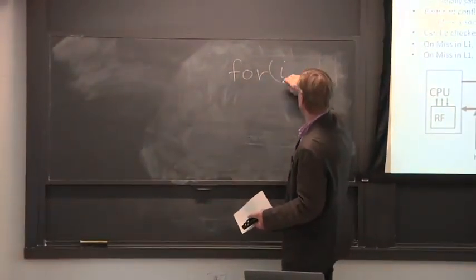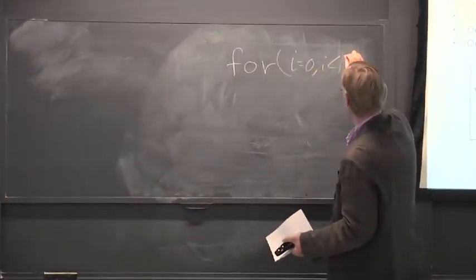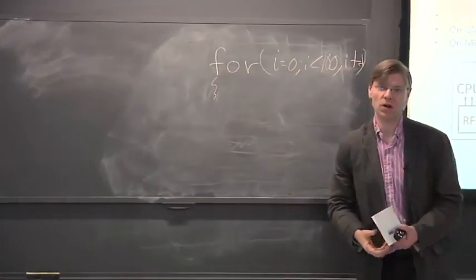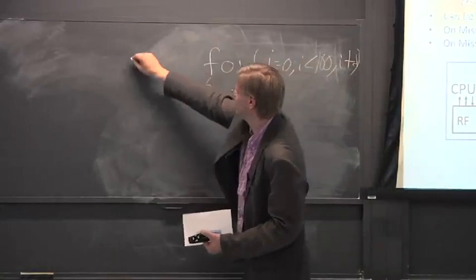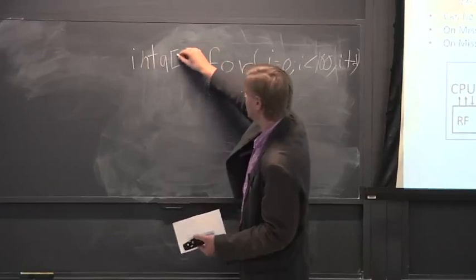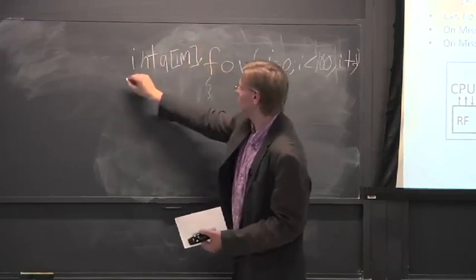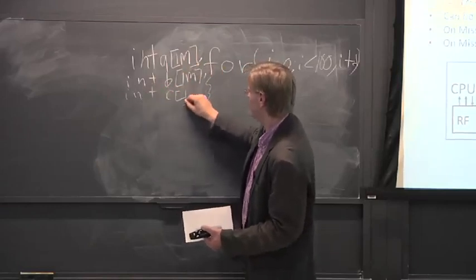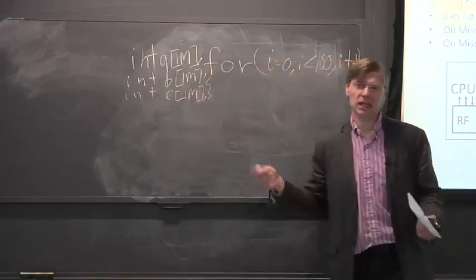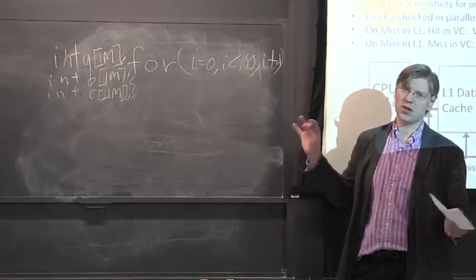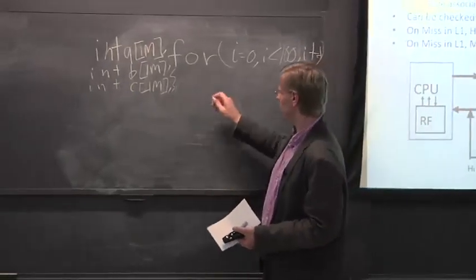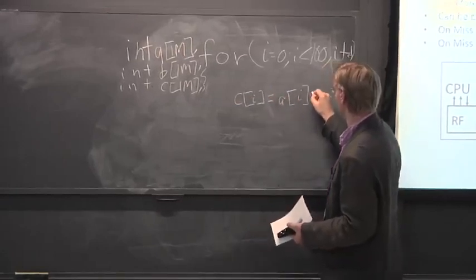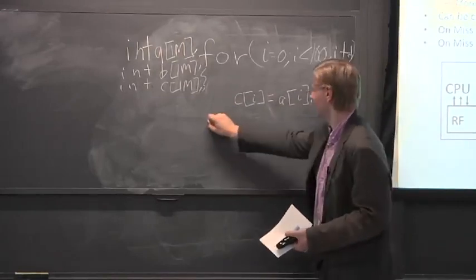For i equals zero, i less than some big number, i plus plus. And then let's say we have three arrays which are all large. So let's say we have an integer array a, which is one million. We have an integer array b, which is also one million, and an integer array c, which is also one million. And we'll say that this one million is basically 1,000 by 1,000, a power of 2. In our for loop here, we're going to have a simple loop. The loop's going to say c of i equals a of i plus b of i. And that's our loop.